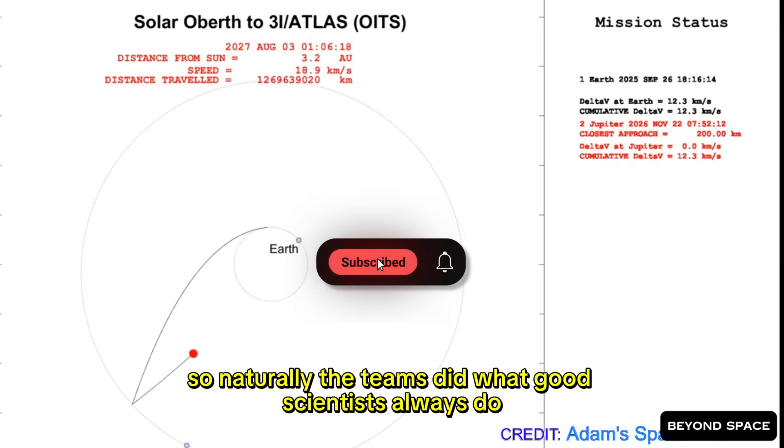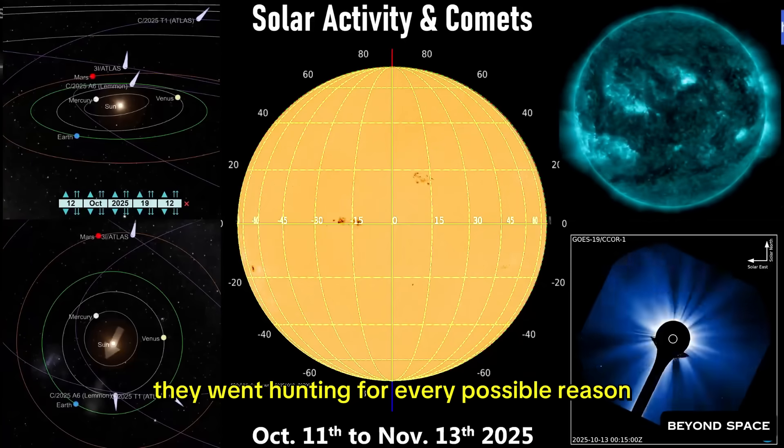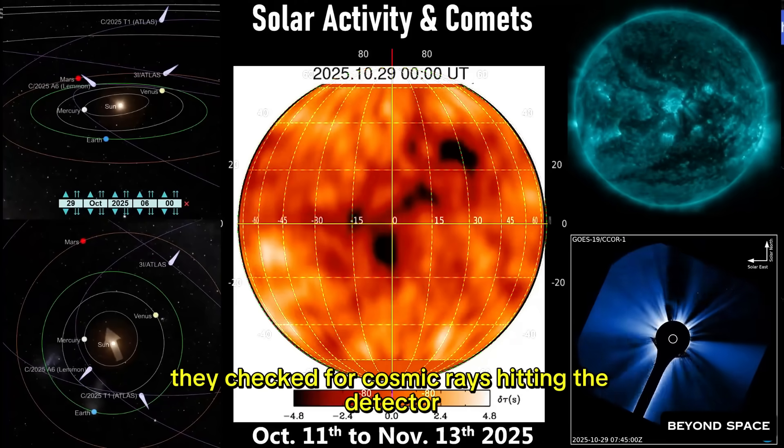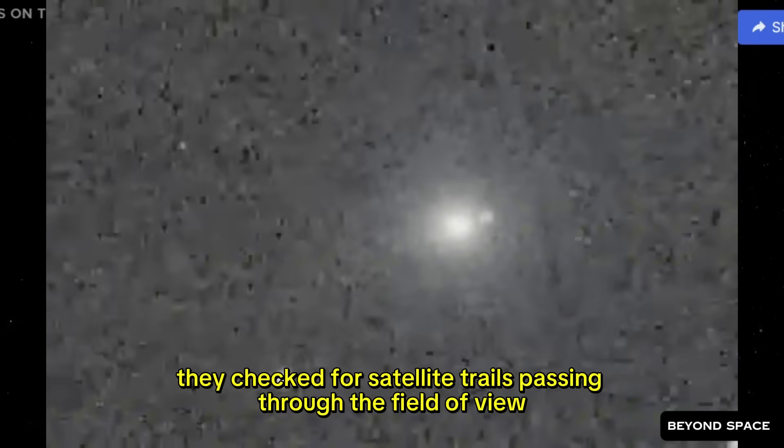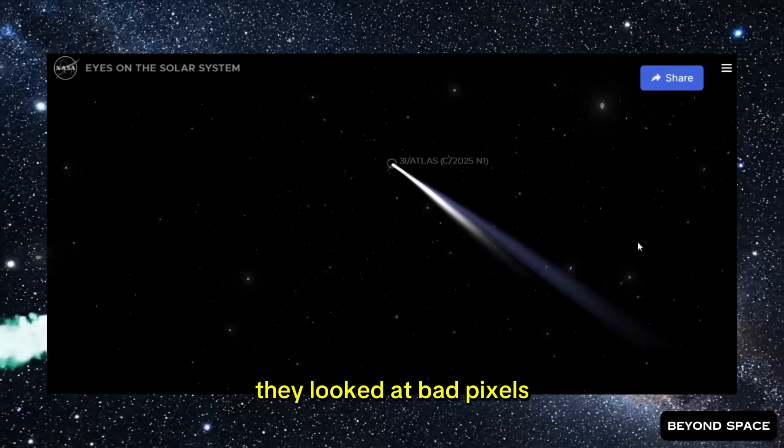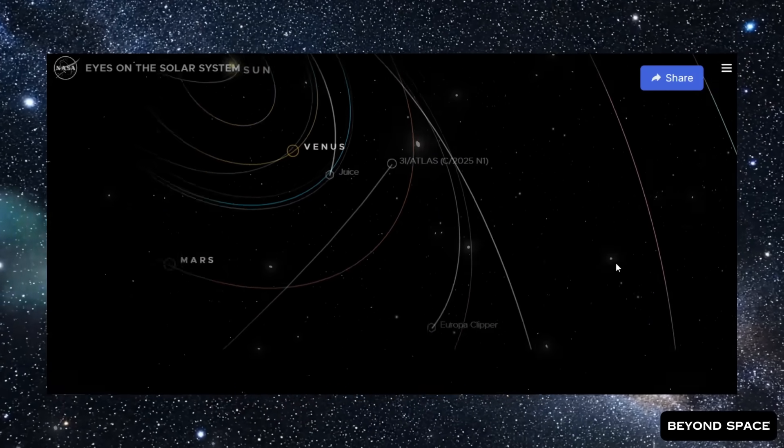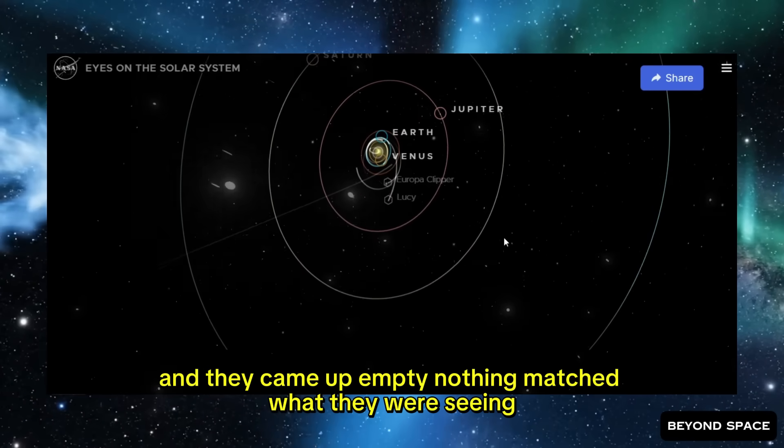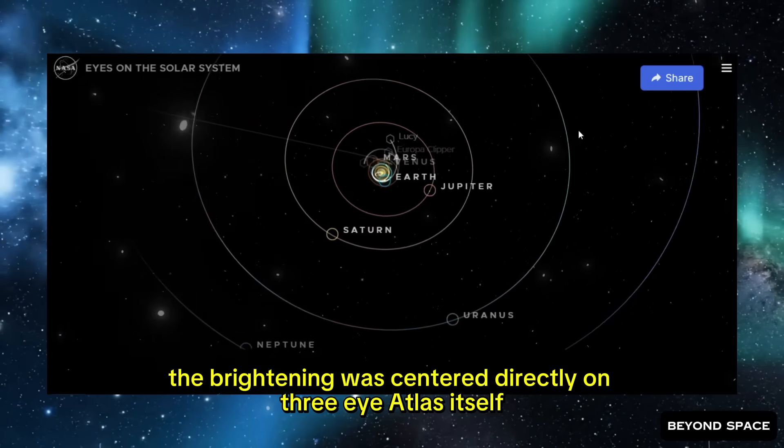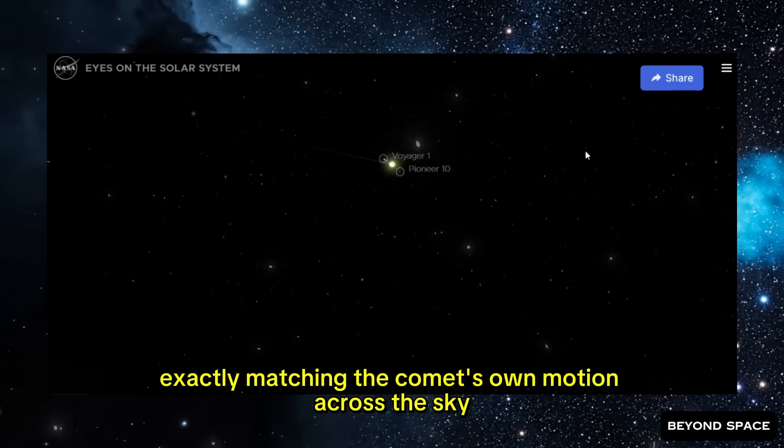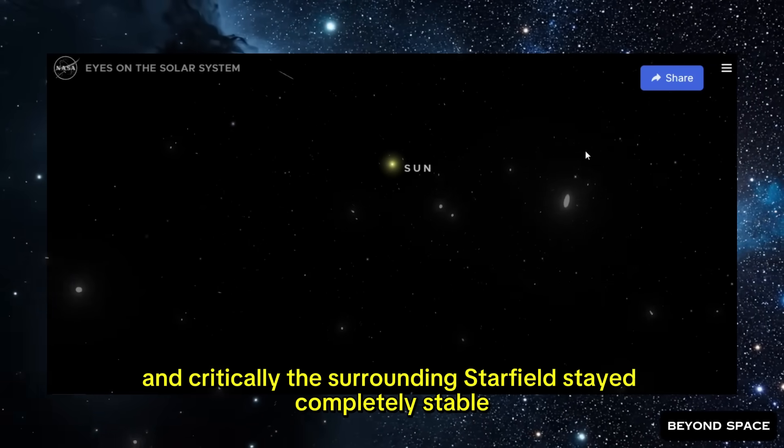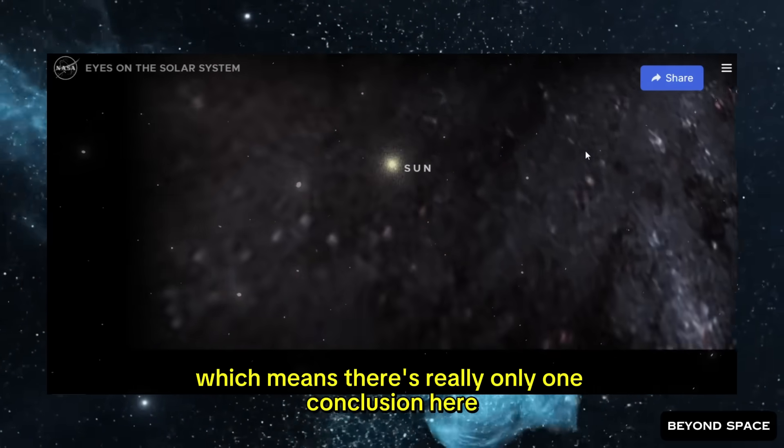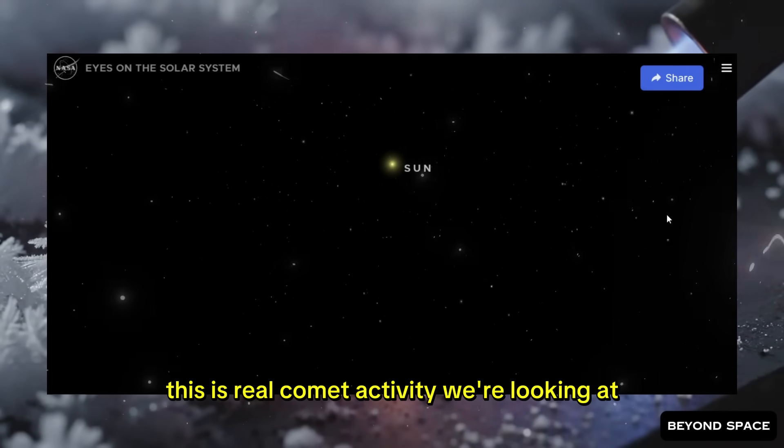So naturally, the teams did what good scientists always do. They tried to explain it away. They went hunting for every possible reason this could be an instrumental artifact rather than something real. They checked for cosmic rays hitting the detector, because those can create false brightening events. They checked for satellite trails passing through the field of view. They looked at bad pixels. They examined guiding errors. They went through every single thing that could potentially fake a short, sharp burst of light like this. And they came up empty. Nothing matched what they were seeing. The brightening was centered directly on 3i Atlas itself.